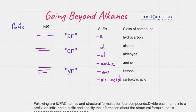This will be followed by infix, which tells us whether we have a single, double, or triple bond. So if we have a single bond, the infix will be 'an'. If we have a double bond, we will see 'en', alkene. And if we have a triple bond, it will be 'yn' for alkyne.